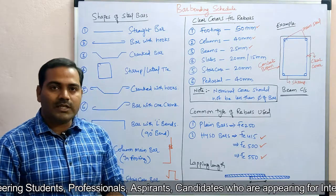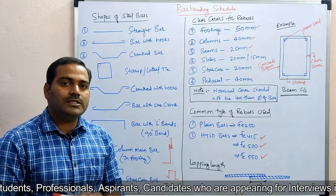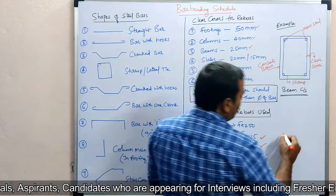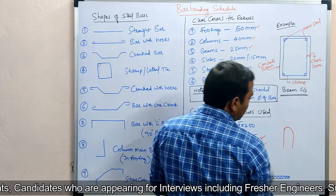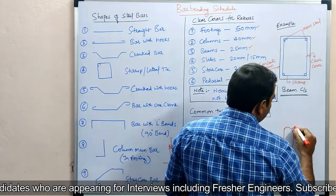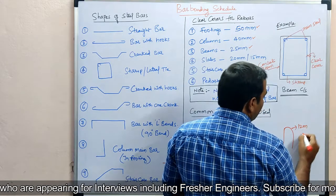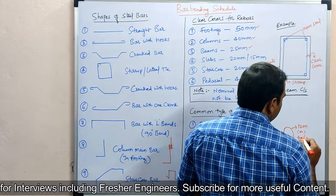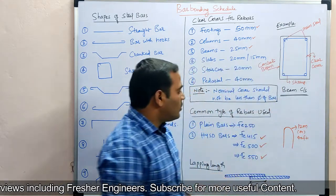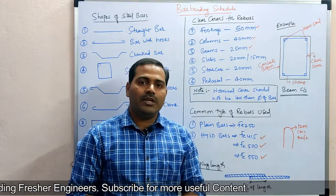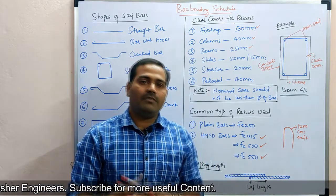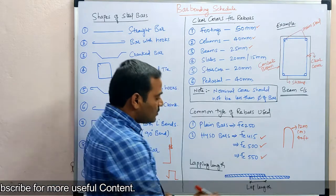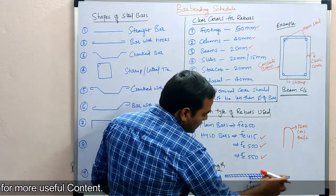Now, coming to lapping length — what is lapping length? In general, we provide lapping in reinforcement because the standard length of a bar is 12 meters, or 40 feet. After this length, we need to overlap the bar to continue it.